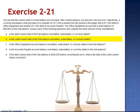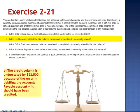Letter B: is the credit column total of the trial balance overstated, understated, or correctly stated? The credit column is understated by $22,500. Because of the error in debiting the accounts payable, it should have been credited. The reason the difference is $22,500 is because our error, instead of increasing accounts payable by $11,250, it decreased accounts payable by $11,250. This caused a swing, a difference in the total, by twice the erroneous amount.